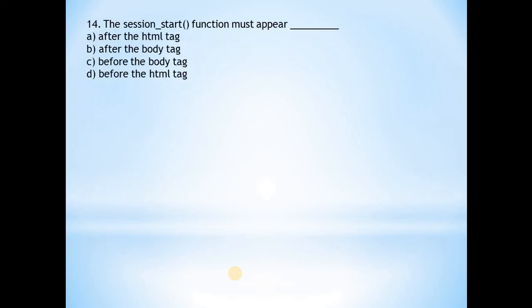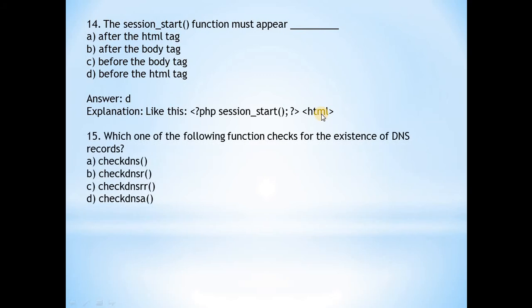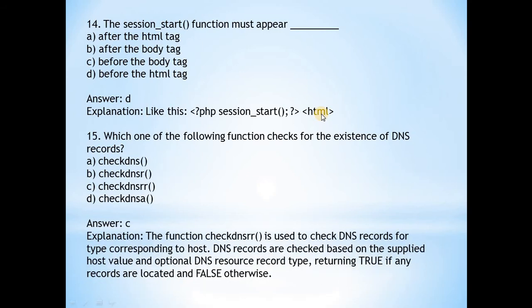Next: The session_start() function must appear... Answer is d, before the HTML tag. For example: opening PHP tag, session_start() function with semicolon, close PHP tag, and then comes the HTML tag. So it should be before the HTML tag. Next: Which one of the following functions checks for the existence of DNS records? Answer is c, checkdnsrr(). It is used to check DNS records for type corresponding to host.